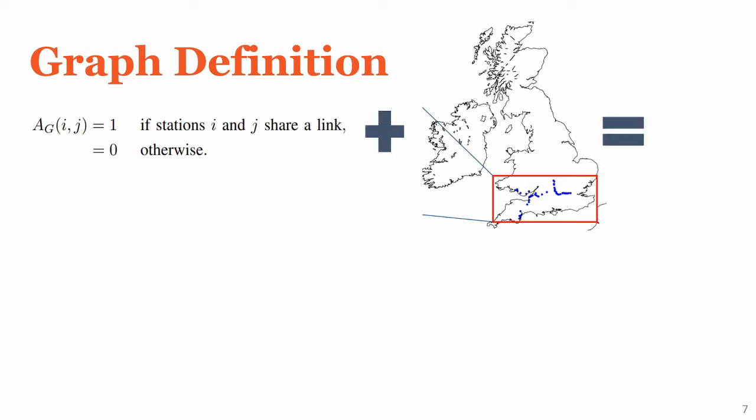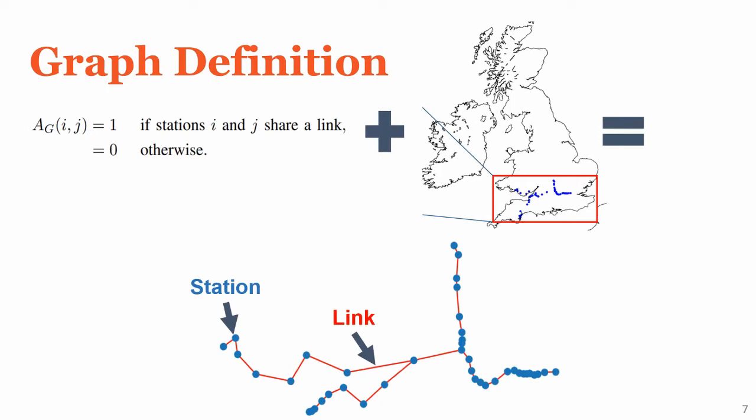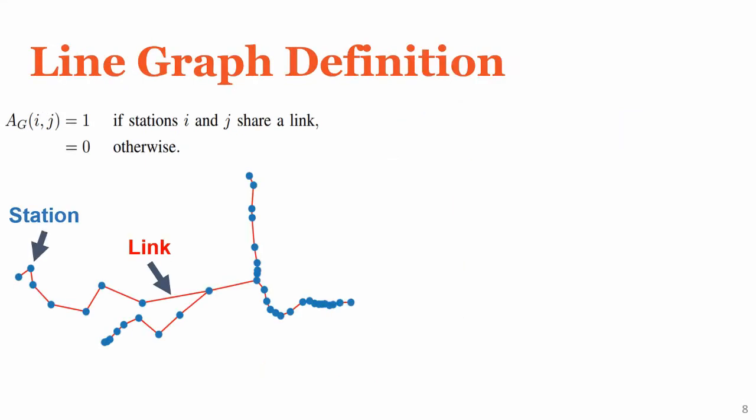We start our graph formulation by defining our graph formally. On the left, we have the mathematical definition of the graph, which simply says that the stations act as nodes on the graph, and links will act as edges on the graph. On the right, we show the part of the British rail network that we focused on for this work, and if you visualized the rail network for this section, you might end up with something like the graph we defined here. The stations are shown as blue circles — these are the nodes of the graph — and the rails between stations are shown in red, which are the links of the rail network, or the edges of the graph. Most existing graph neural networks consider node-based features, and the current graph definition will cause some problems, because links are currently defined as edges, and we really want them to be nodes so that we can take advantage of graph neural networks.